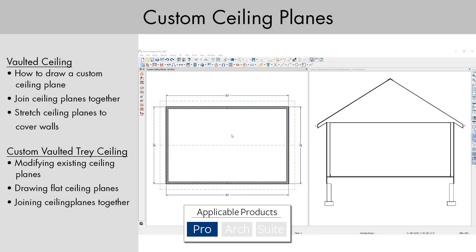The information in the following video applies to Home Designer Pro. In Home Designer Pro, you have the ability to draw custom ceiling planes to customize the ceiling for your model. In this video, I will show you how to use the custom ceiling plane tool to create a vaulted ceiling along with making a tray ceiling.